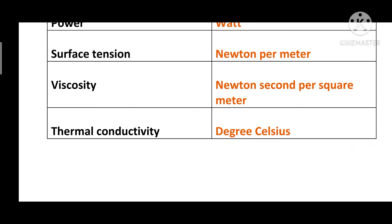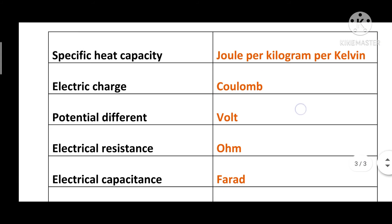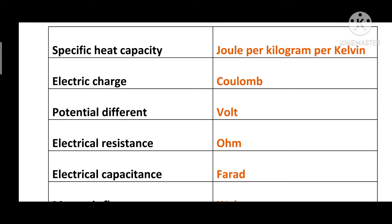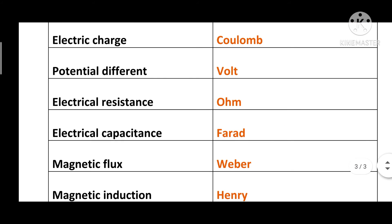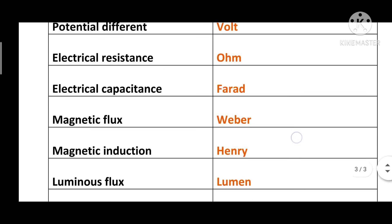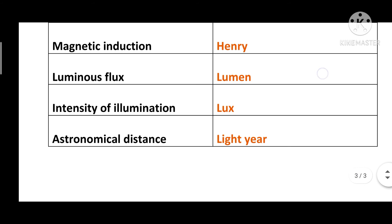Surface Tension: newton per meter. Viscosity: newton second per square meter. Thermal Conductivity: degree Celsius pascal. Specific Heat Capacity: joule per kilogram per kelvin. Electric Charge: coulomb. Potential Difference: volt. Electric Resistance: ohm. Electrical Capacitance: farad. Magnetic Flux: weber. Magnetic Induction: henry. Luminous Flux: lumen.